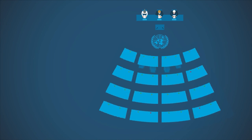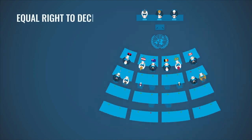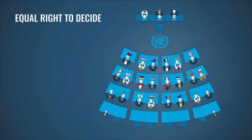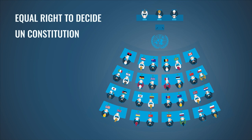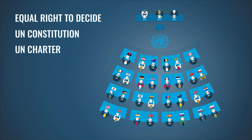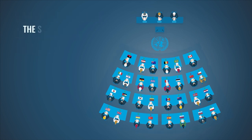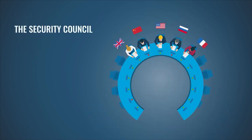In the UN General Assembly, all countries — small and large — have one vote and the same say. All member states are committed to follow the Constitution of the United Nations, the UN Charter, where peace and human rights are central topics.